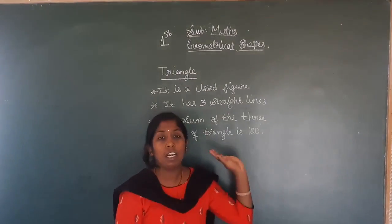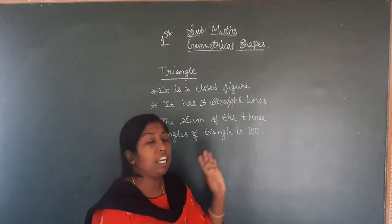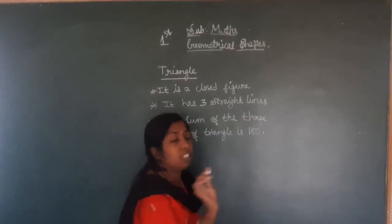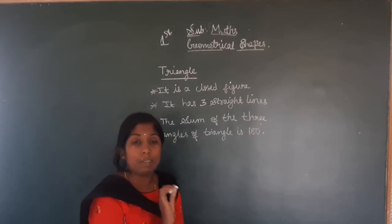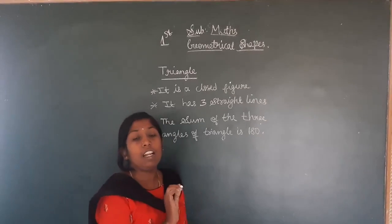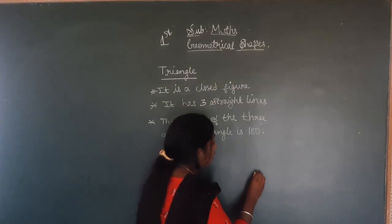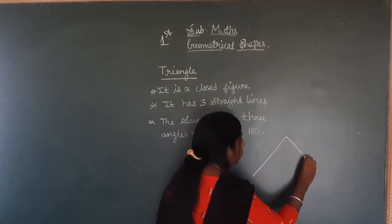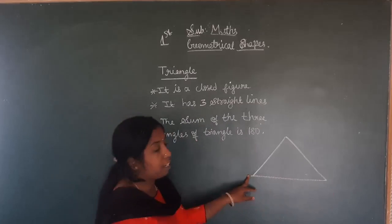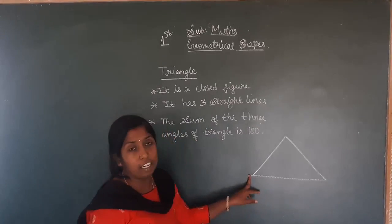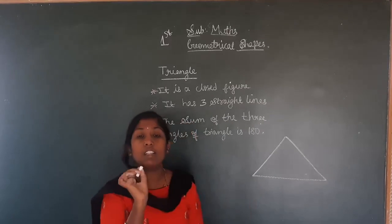Next, we learn about triangle. Triangle means three sides. It is a closed shape. Closed shape means where I am starting the line and ending at the same place. Triangle is in this shape — where I start and end at the same line, it is a closed figure.